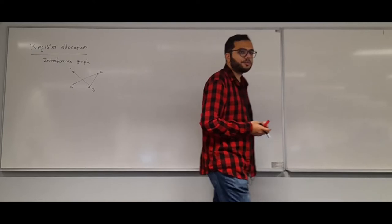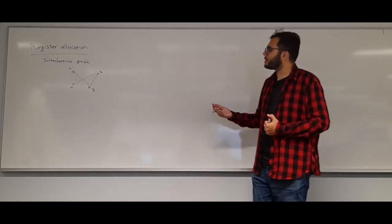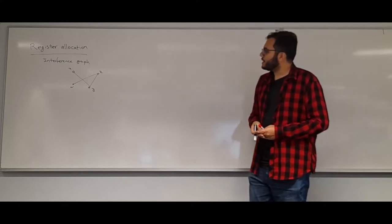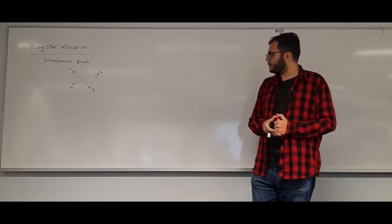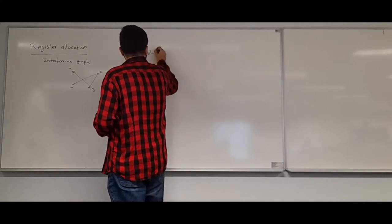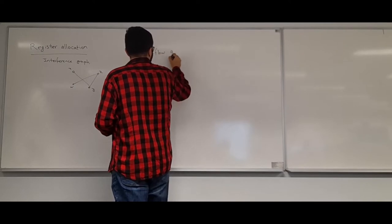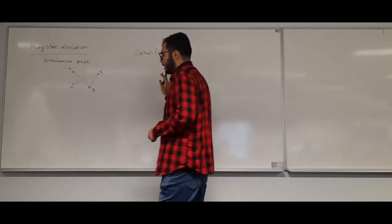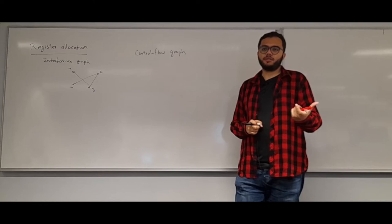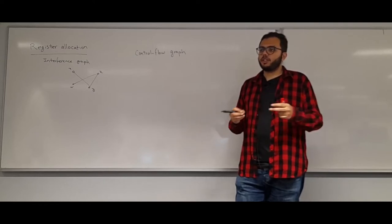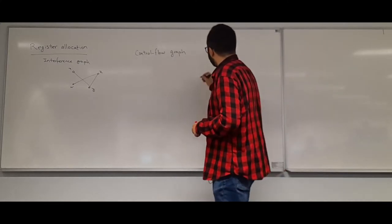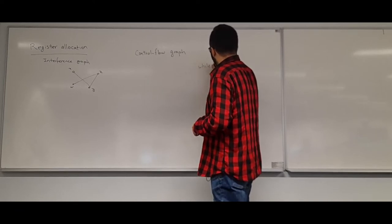It might seem odd that I'm talking about registers and programs when I could just say I have a graph and I want to color it. But the reason I'm using the concept of programs is that programs have something called a control flow graph — a different graph where we put one vertex for every line or statement in our code, and a directed edge if execution can go from one line to another.